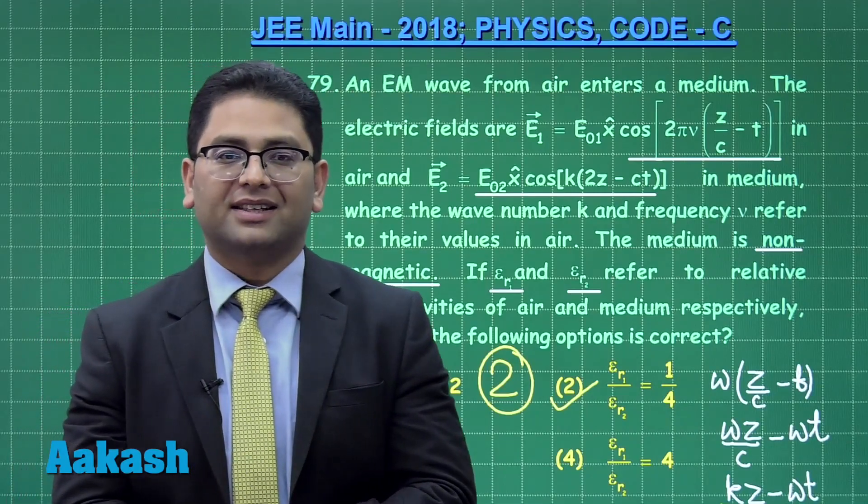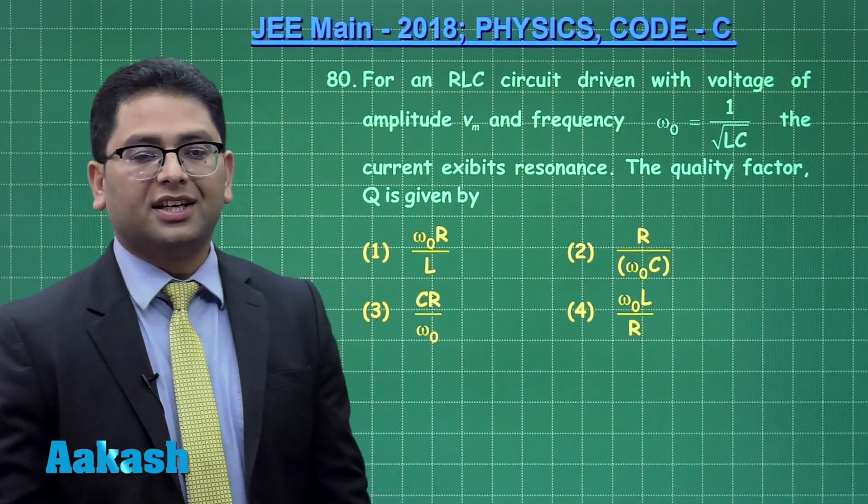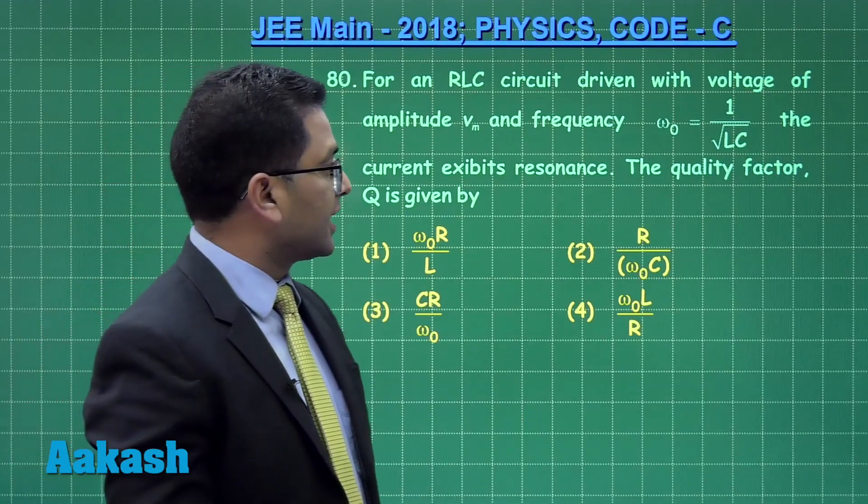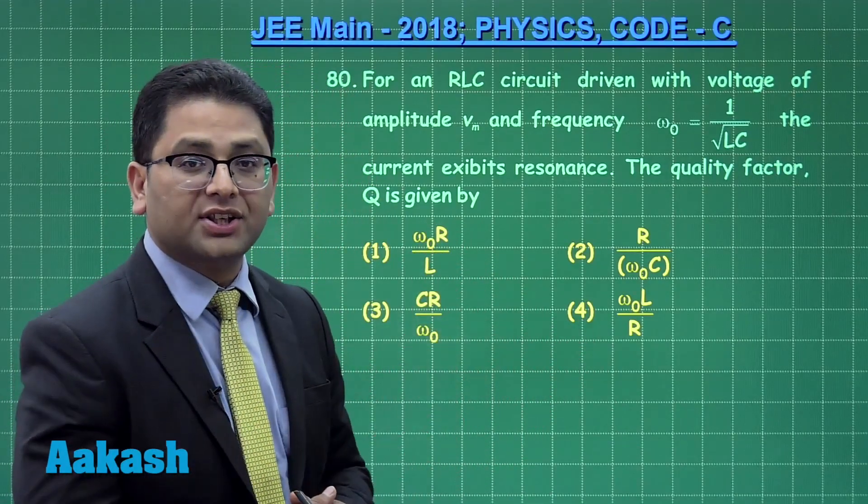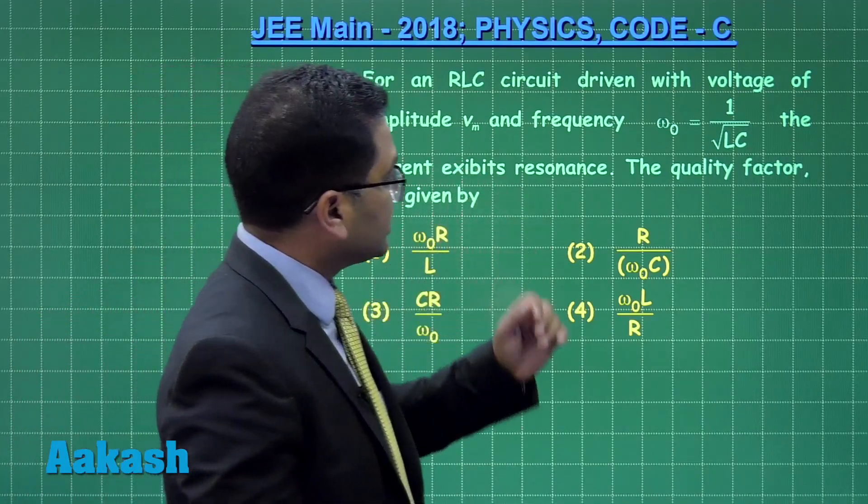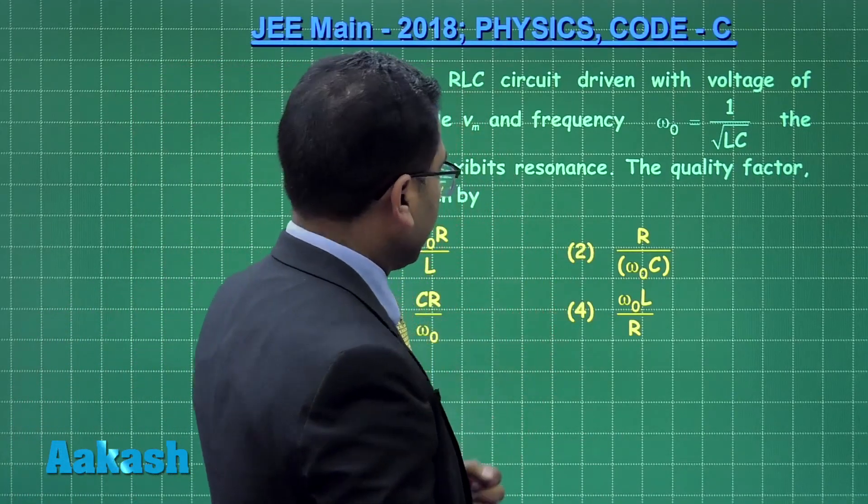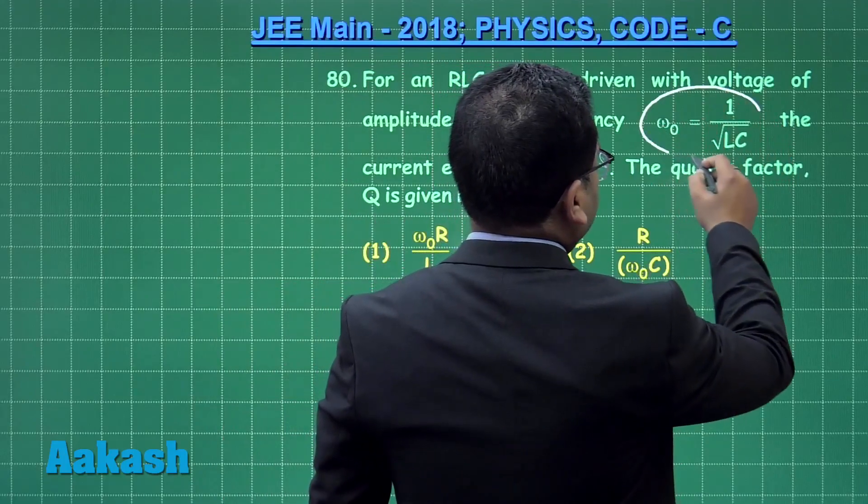Question number 80 is from alternating circuits, a straightforward fact-based question. There is an RLC circuit driven with voltage, and the resonance frequency is given. The current exhibits resonance at this frequency and we need to calculate the quality factor.